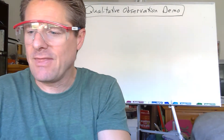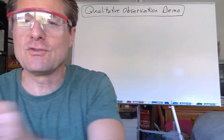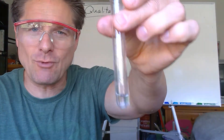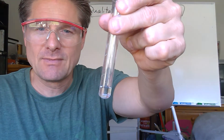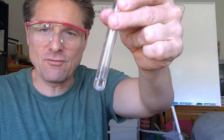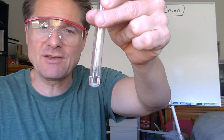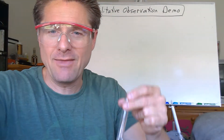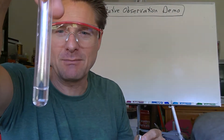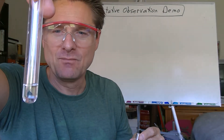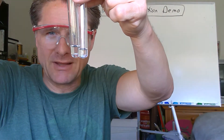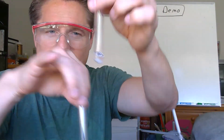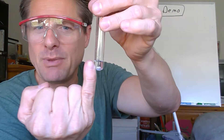What I'd like you to do is practice — pull out the qualitative observation handout and try to describe the lead(II) nitrate and the potassium iodide yourself first. I'm going to try to get these to about one milliliter each. A milliliter is about the size of your pinky fingernail.